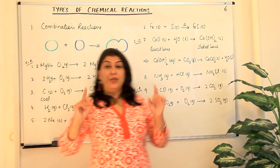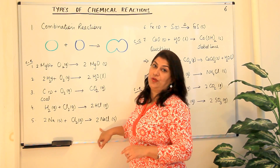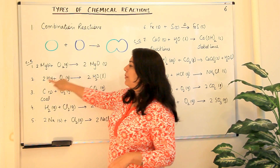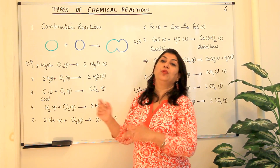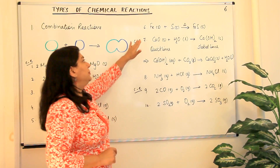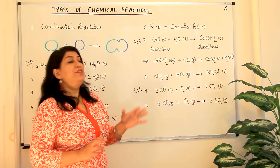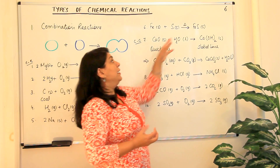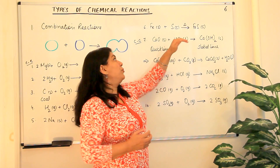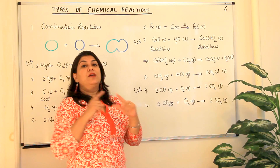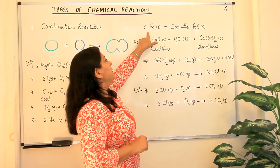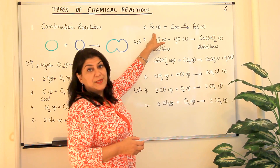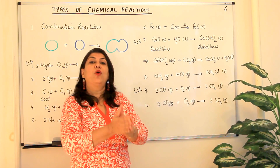The next equation: iron (solid) combines with sulfur (also solid). The triangle shown over the arrow indicates heating — conditions of a reaction are written above and below the arrow mark. When you heat them, it results in the formation of iron sulfide. Iron combines with sulfur to give iron sulfide, and this is also a combination reaction because there are two different elements as reactants and only one product.